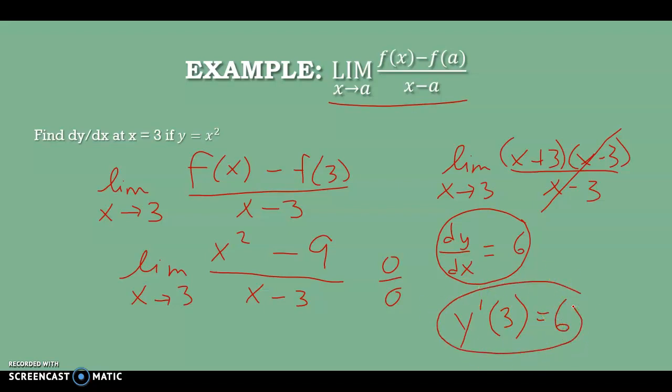So dy/dx equals 6 — that's Leibniz notation. I could also say y prime of 3 equals 6 — that's Newton's notation. Either notation is fine. For the quadratic graph at x equals 3, the slope is 6. If you picture the quadratic graph, at x equals 3 it's pretty steep, so a slope of 6 makes sense.